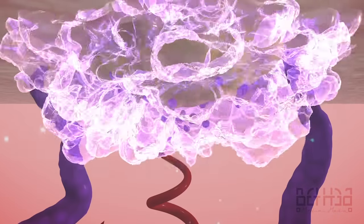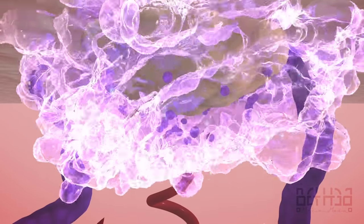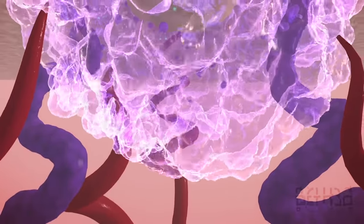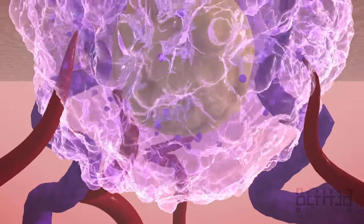The cytotrophoblast secretes proteolytic enzymes, and the syncytiotrophoblast sends out finger-like projections, allowing the blastocyst to embed into the endometrium.